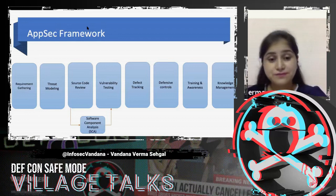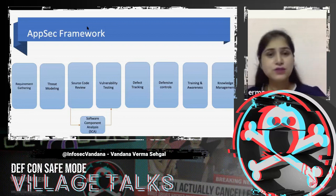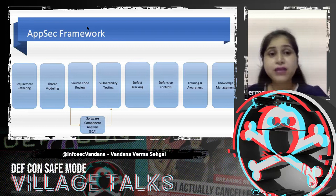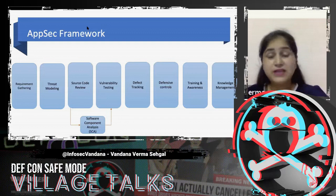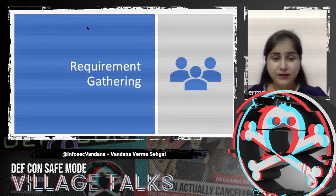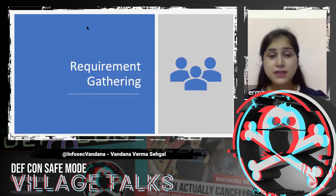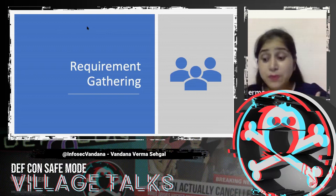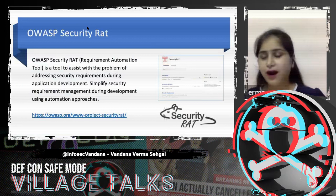We need to have an AppSec program because if the organization doesn't feel they need one, the framework will never help us. We need to have an inventory of the applications we have or are going to build. So, with requirements gathering first, we need to gather the requirements — these are the things we need in an application, these are the applications we have. Everything needs to be noted down. But where are we going to have a place where we can list down these things? And based on those things, we are going to decide our plan.